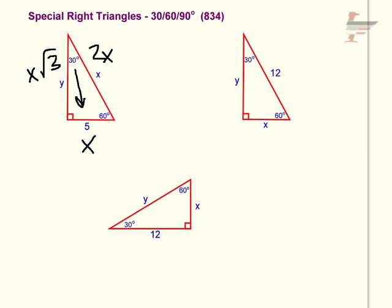So in this example, I'll call it the first example, x is equal to 5. That means the hypotenuse is 10 because that's the same as 2x and the vertical side opposite the 60 is 5 root 3.